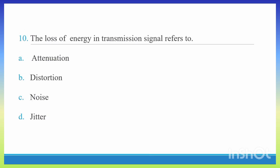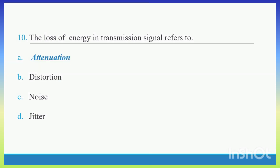Question 10. The loss of energy in transmission signals refers to. Option A: Attenuation. Option B: Distortion. Option C: Noise. Option D: Jitter. The loss of energy in transmission of signals refers to Attenuation. Right Answer A: Attenuation.